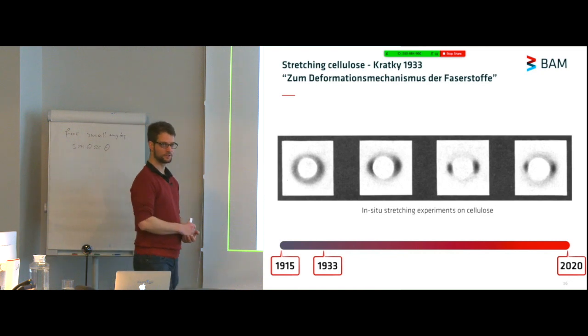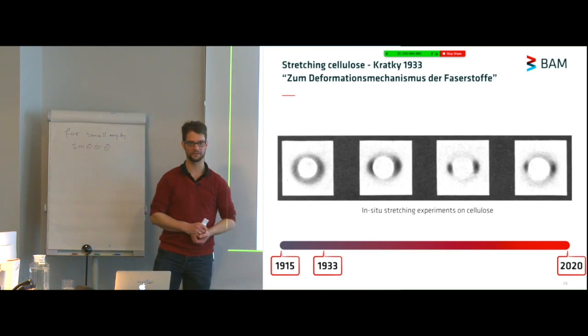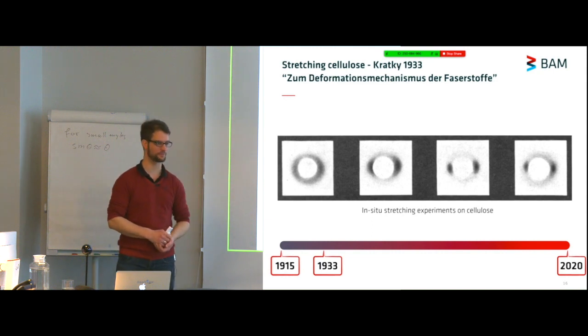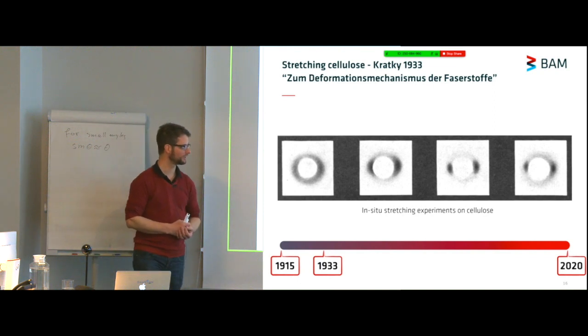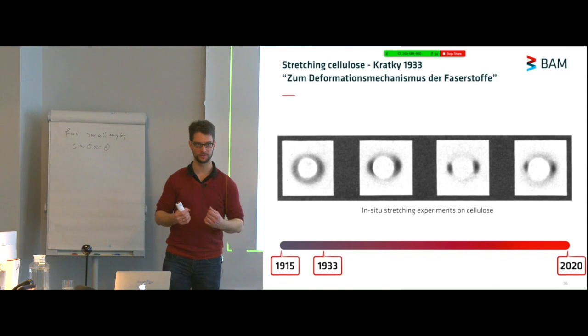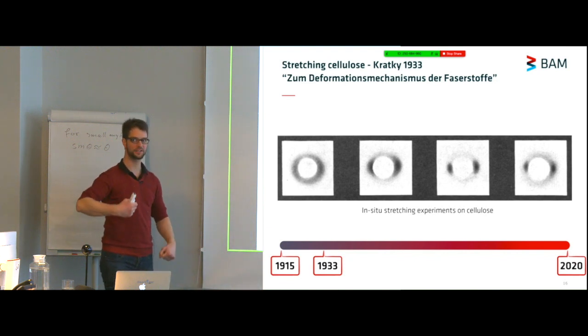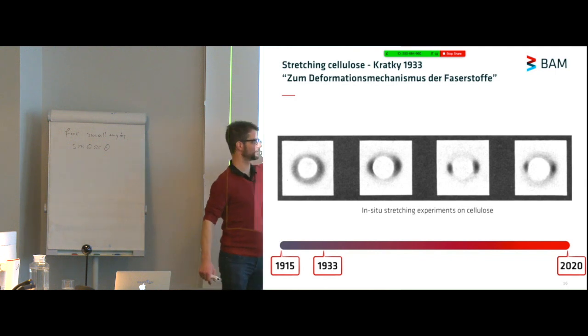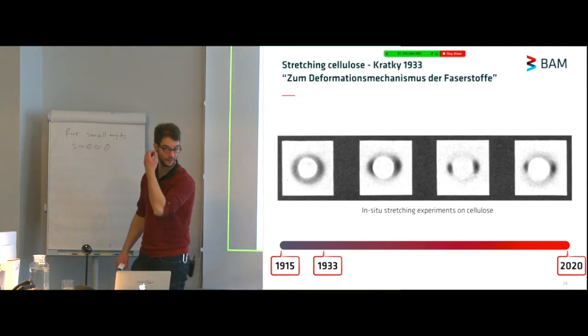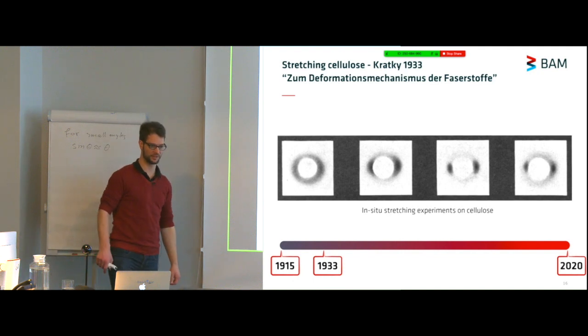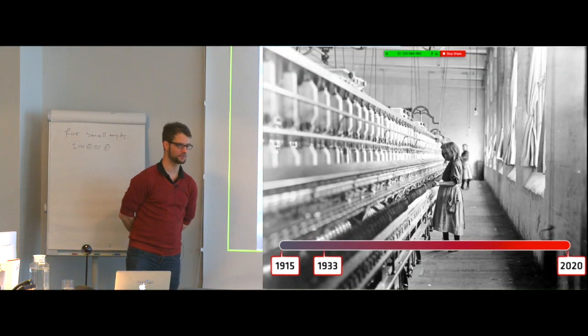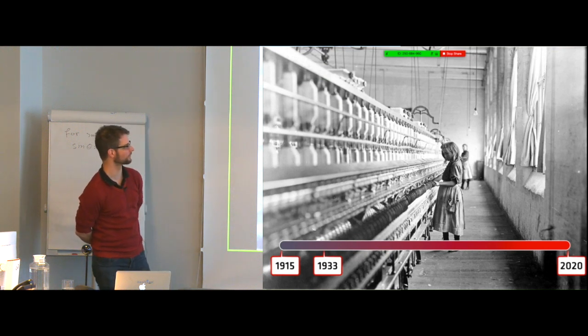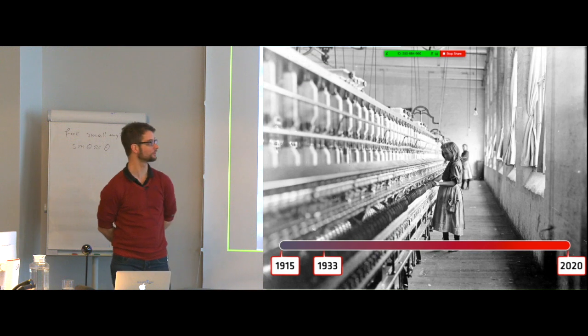The first in situ experiment I found was from 1933. This is from Kratky, who later went on to develop the Kratky camera. What he did was he took a filament of cellulose, stretched it, and by analyzing the scattering behavior around the beam stop, he could correlate the changes in internal structure by the differences in the scattering behavior. Remember that in 1933, it was still fine to go and send your kids off to work in a factory to earn extra money for your family. Child labor was perfectly fine.